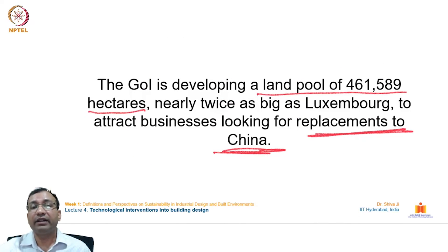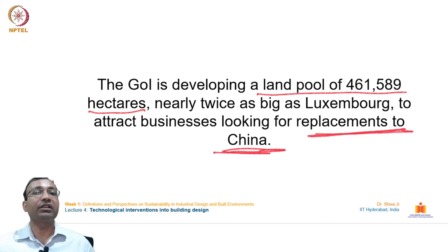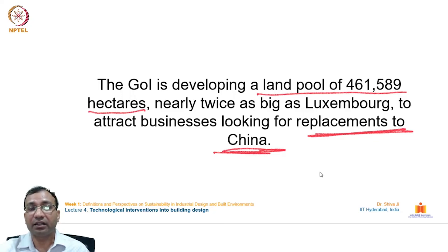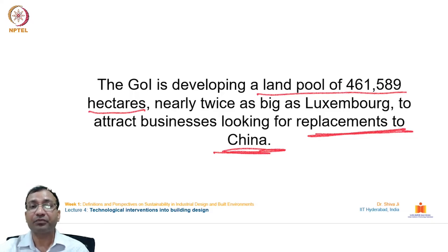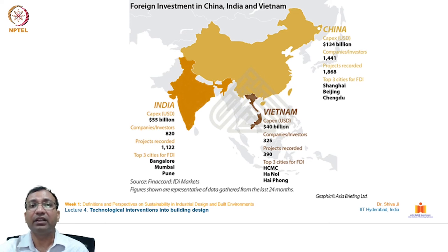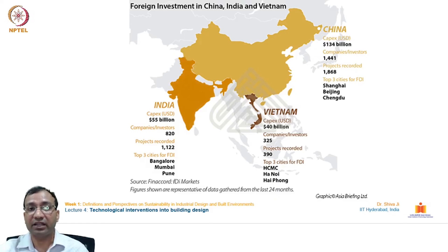The Government of India is currently creating a land pool of 461,589 hectares — a piece of land twice the size of Luxembourg — as a place to host industries moving out of China in recent times. Several policy-based changes in the neighboring country have prompted multinational companies to move out, and India can take this as an opportunity to work for its benefit while maintaining sustainable growth and development.